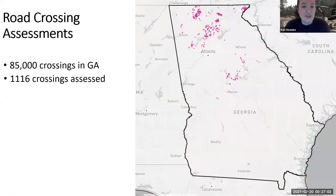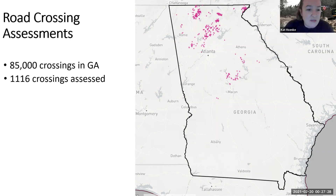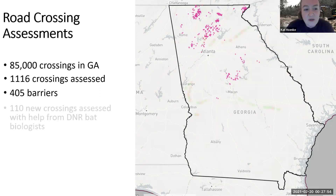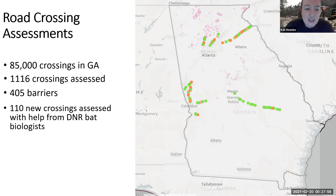In Georgia, there are over 85,000 crossings — any place where a road crosses a stream. Not all of these will be barriers to aquatic organisms. We've been able to assess over 1,000 crossings across the state, some done prior to the SARP protocol by the University of Georgia and the Forest Service, and about 300 to 400 more using our protocol. Of those assessed, 405 have been determined to be barriers to aquatic organisms based on scoring. We then look at those barriers to determine which are the most ecologically beneficial to remove.